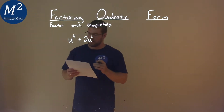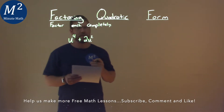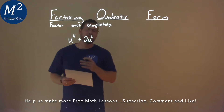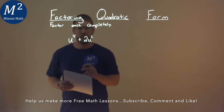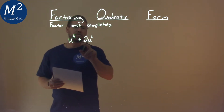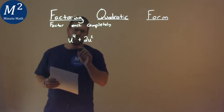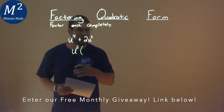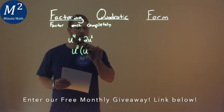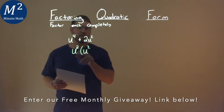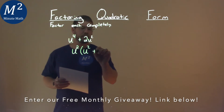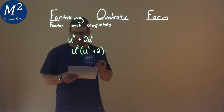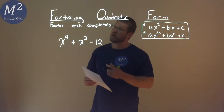We're given this problem right here: u to the fourth power plus 2u squared, and we need to factor completely. This one actually isn't too difficult. We have the fourth power and the second power. We see a u squared is in both parts here, so we're going to pull that out. Pull out a u squared, and what are we left with? u to the fourth divided by u squared is u squared. 2u squared divided by u squared is just 2. And so, this actually is our final answer: u squared times u squared plus 2.